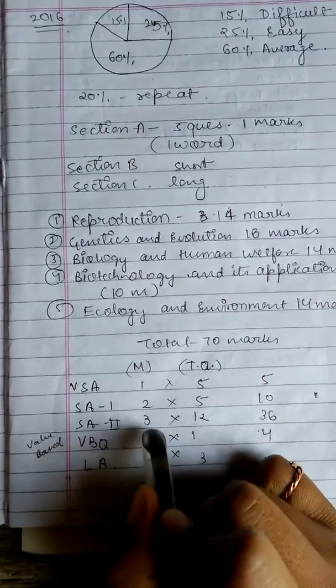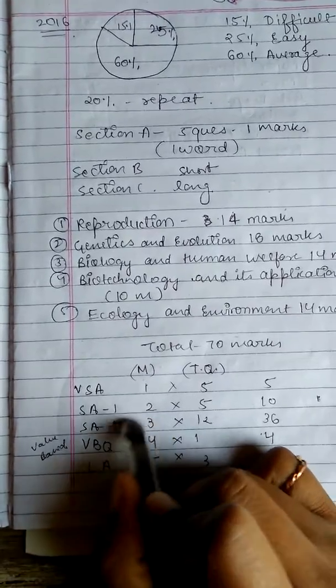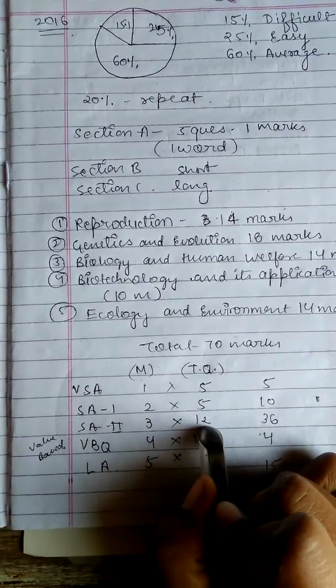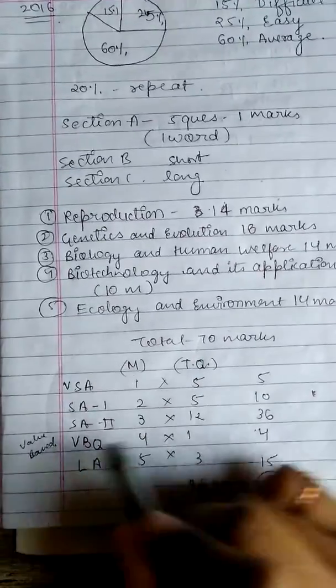Short answers, second type, 3 marks each question, 12 questions are there. 12 times 3, 36.